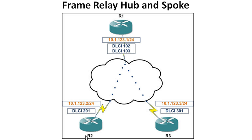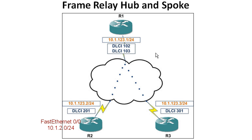Say we throw a loopback or a LAN address on here — 10.1.2.0/24 — and we advertise that through a routing command up to R1. R1 learns it and says, okay, anytime I need to send a packet to that LAN subnet I just go out serial 0/0/0. The problem is it's not going to advertise that to R3, because it learned that advertisement through serial 0/0/0, and the split horizon rule says you can't advertise back out the same interface you learned it on.